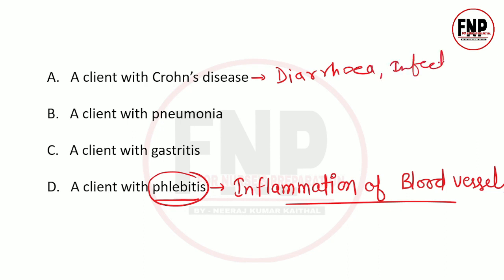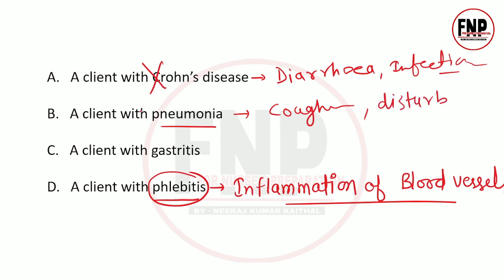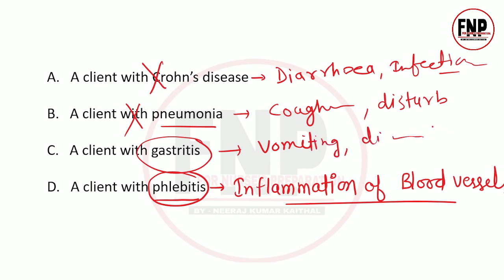Crohn's disease aur pneumonia waale patient ko gastric resection patient ke saath shift nahin karenge - infection transmission ka risk hai. Gastritis ka matlab hai stomach ki mucosal layer mein inflammation, jiske kaaran patient ko vomiting aur diarrhea hota hai - yeh bhi infection spread kar sakta hai. Isliye gastritis waale patient ko bhi saath shift nahin karenge.